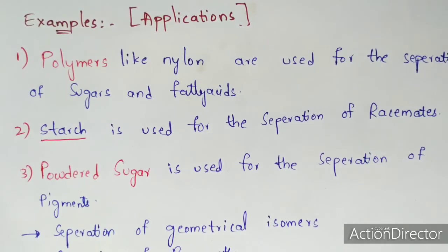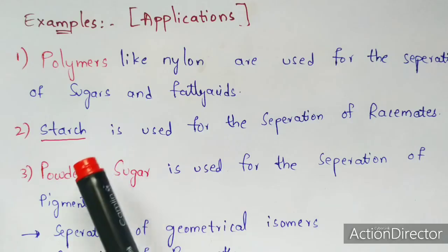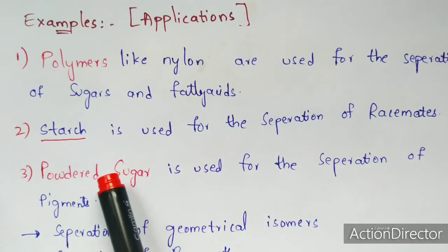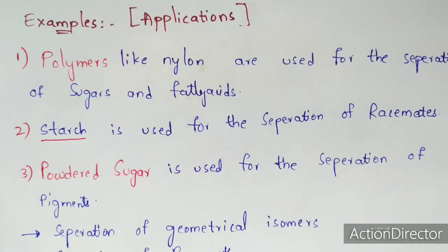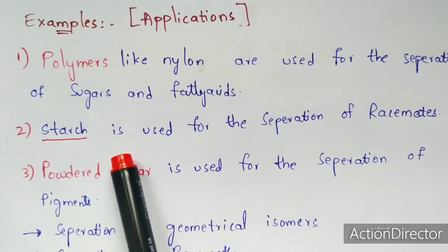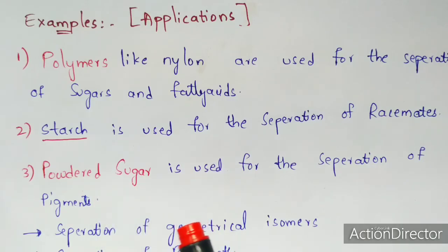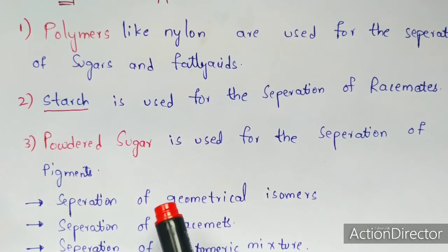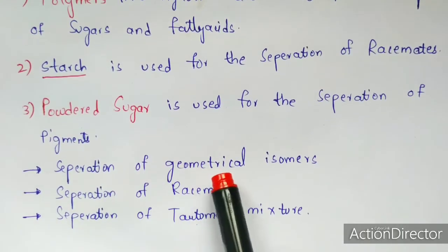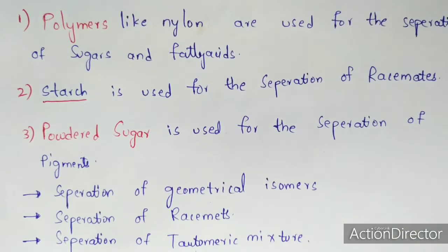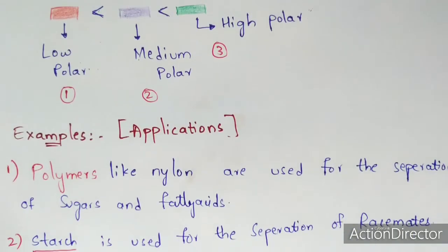The applications include: polymers like nylon are used for the separation of sugars and fatty acids; starch is used for the separation of racemates; and powdered sugar is used for the separation of pigments. Other applications include separation of geometrical isomers like cis- and trans-isomers, separation of racemates, and separation of tautomeric mixtures.